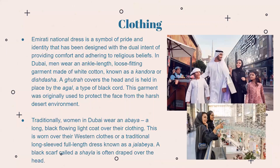Now, culture and clothing. The Emirati national dress is a symbol of pride and identity designed for comfort and adherence to religious beliefs. Men wear an ankle-length, loose-fitting white cotton garment known as the Kandura or Dishdasha. A Khutra covers their head, held in place by the Agal, a black cord originally used to protect the face from the harsh desert environment. Traditionally, women wear an Abaya — a long black flowing coat over their clothing — along with a black scarf called a Shayla draped over the head.